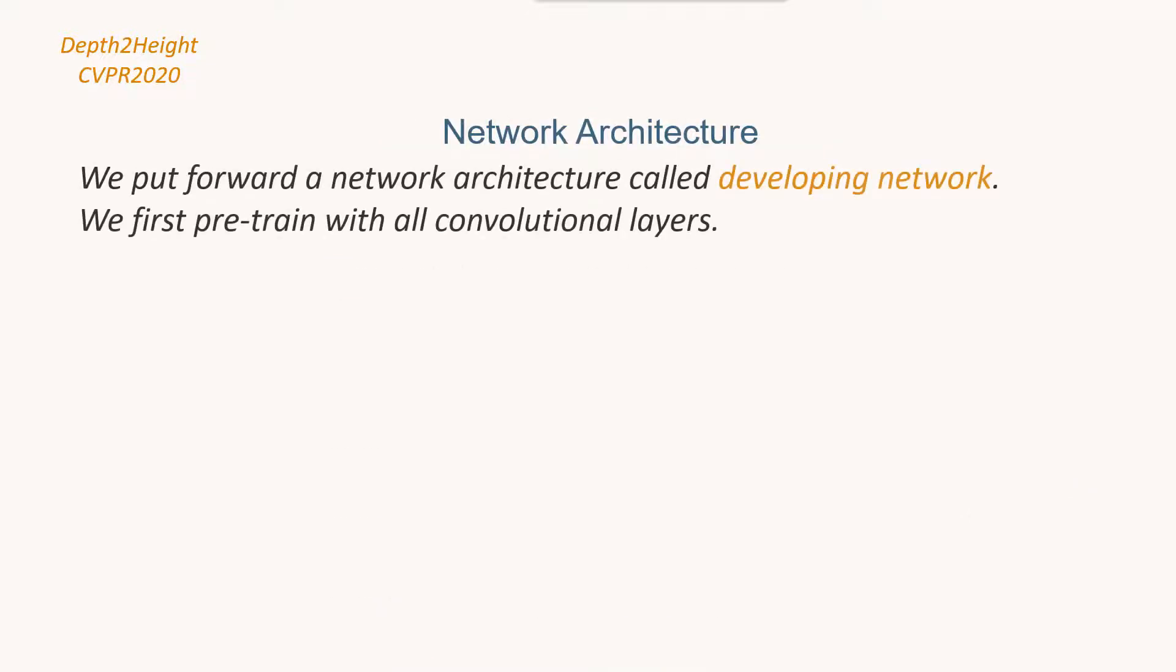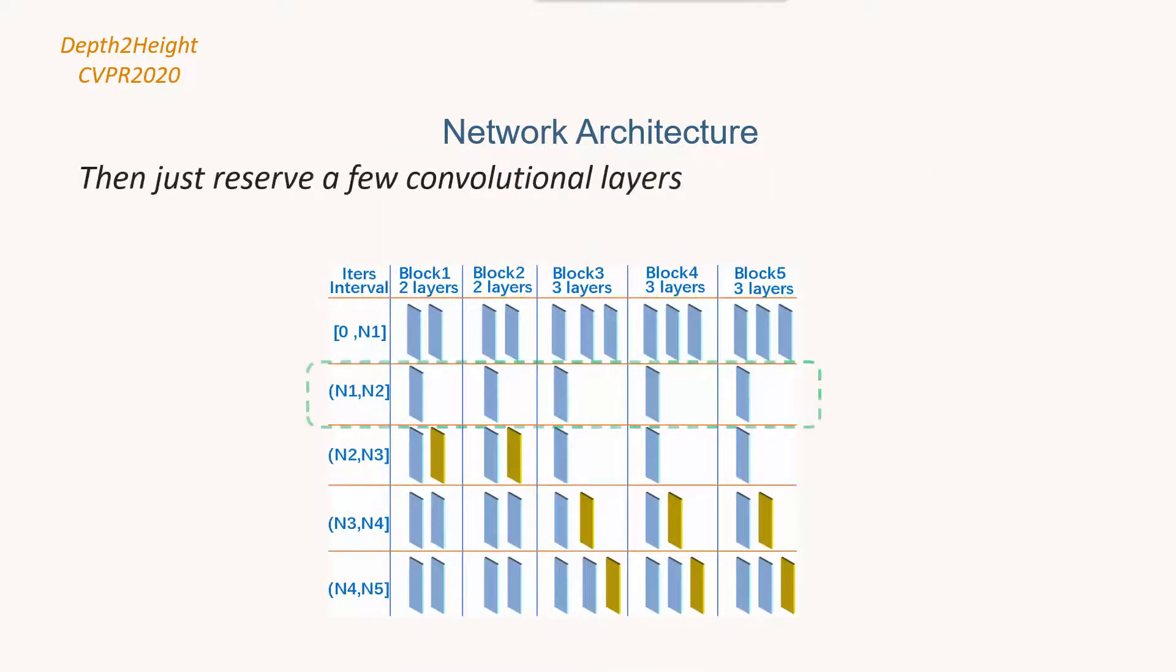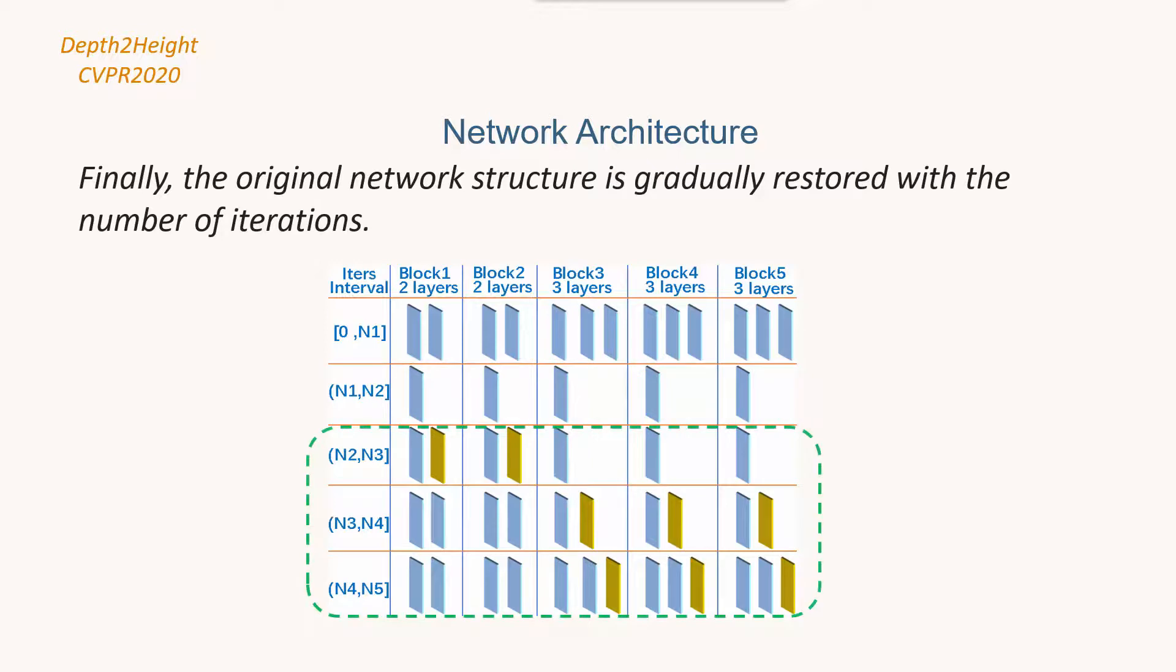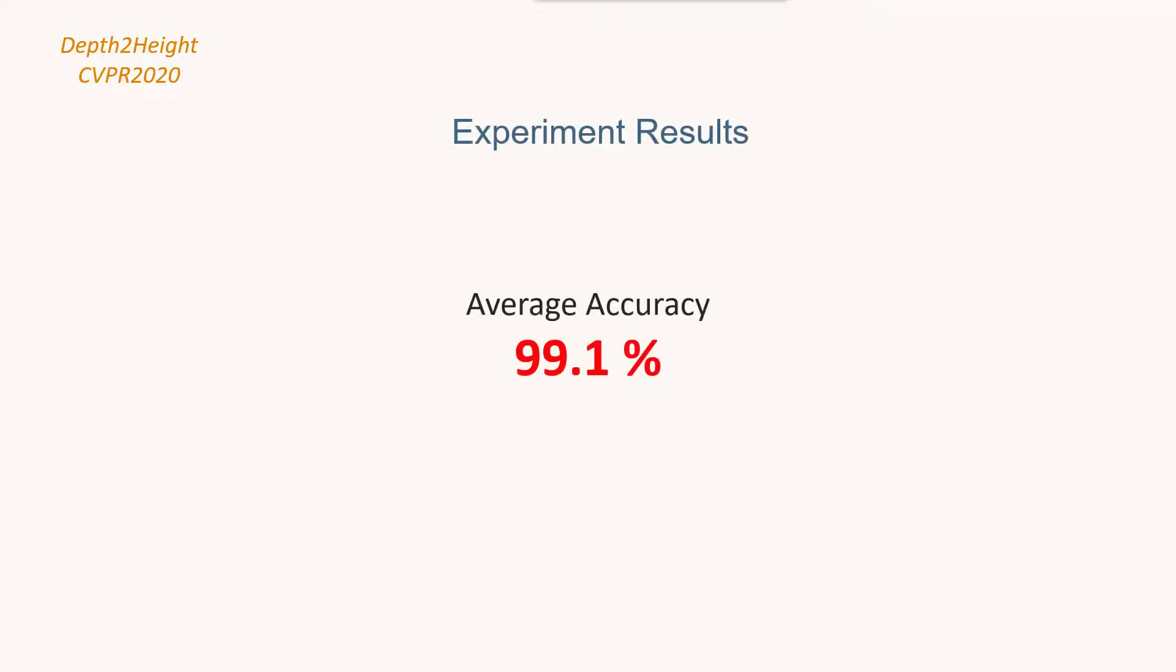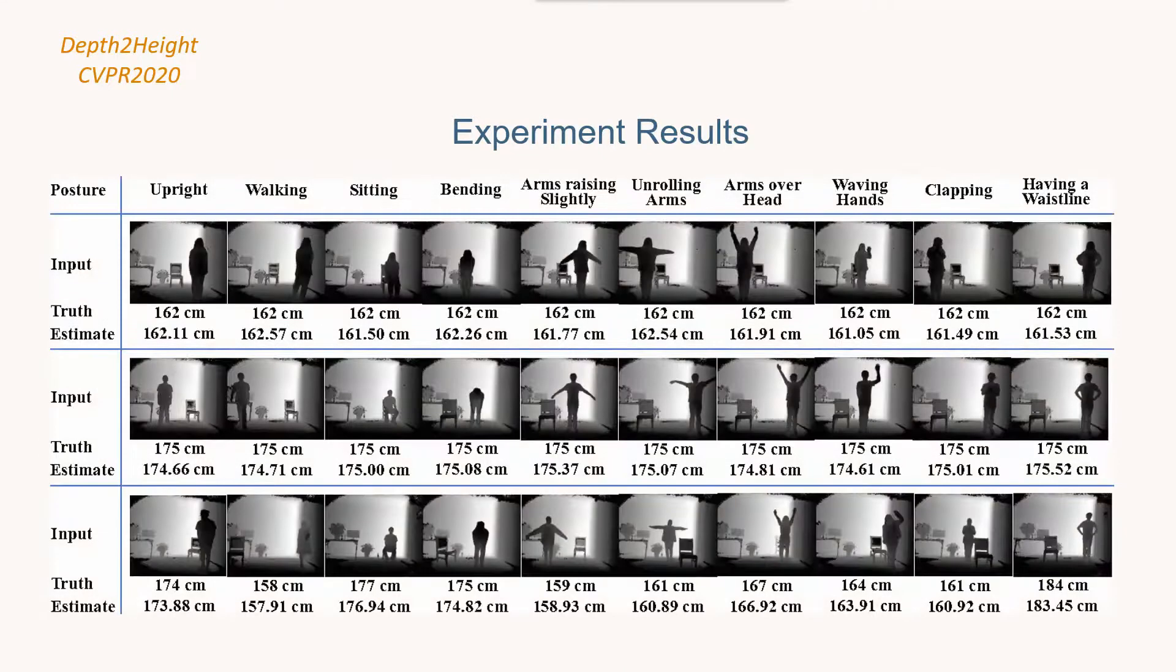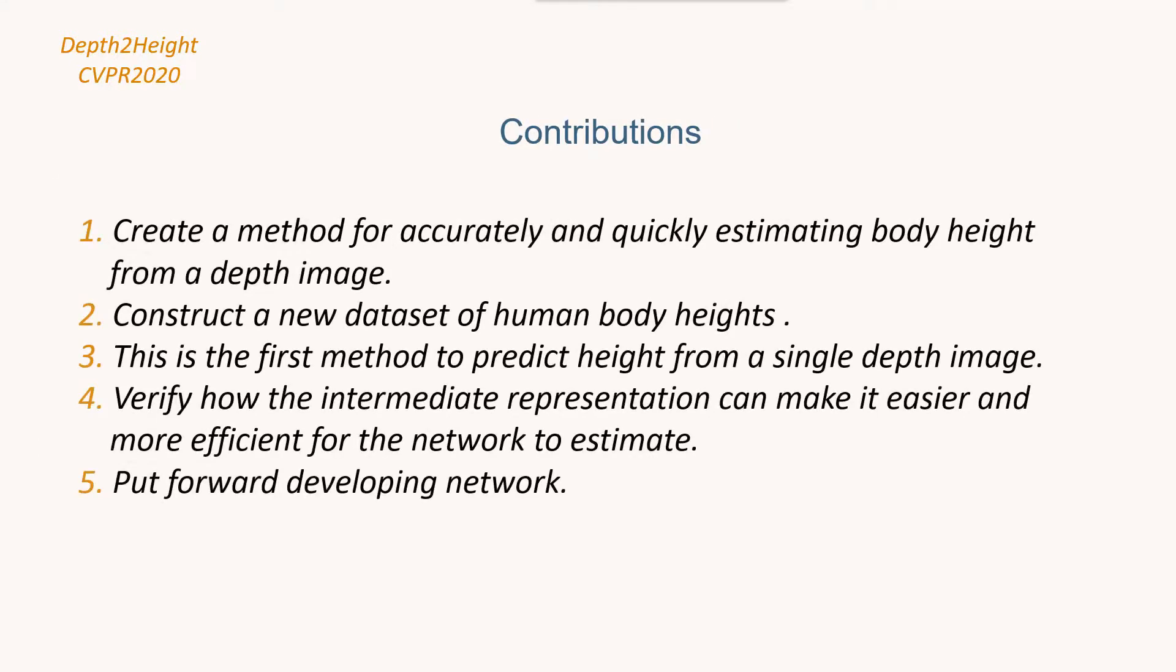We put forward a developing network which can solve the difficult problem of network initialization and significantly improve the accuracy. In experiments our average accuracy reaches 99.1% for people in various positions and postures.